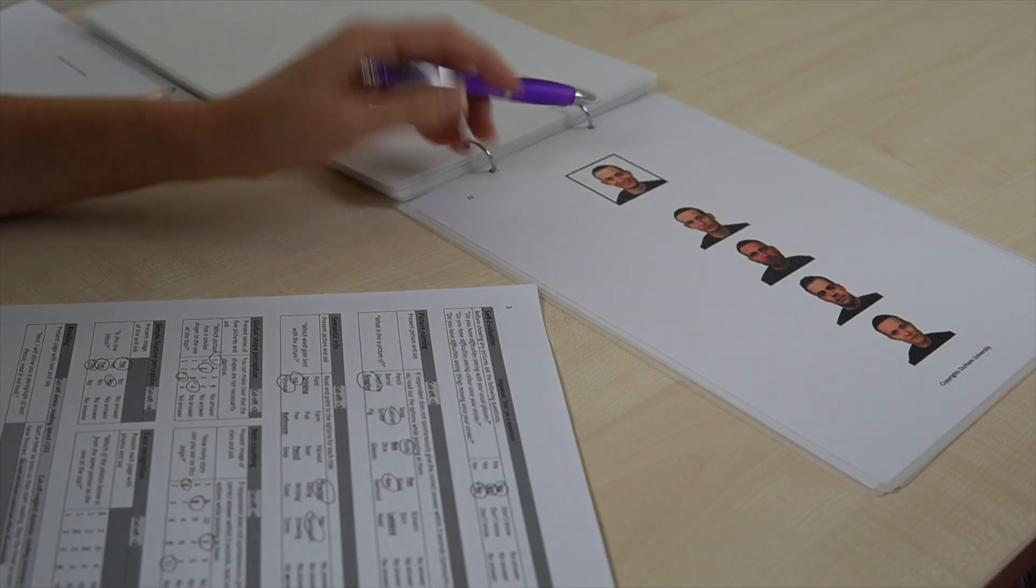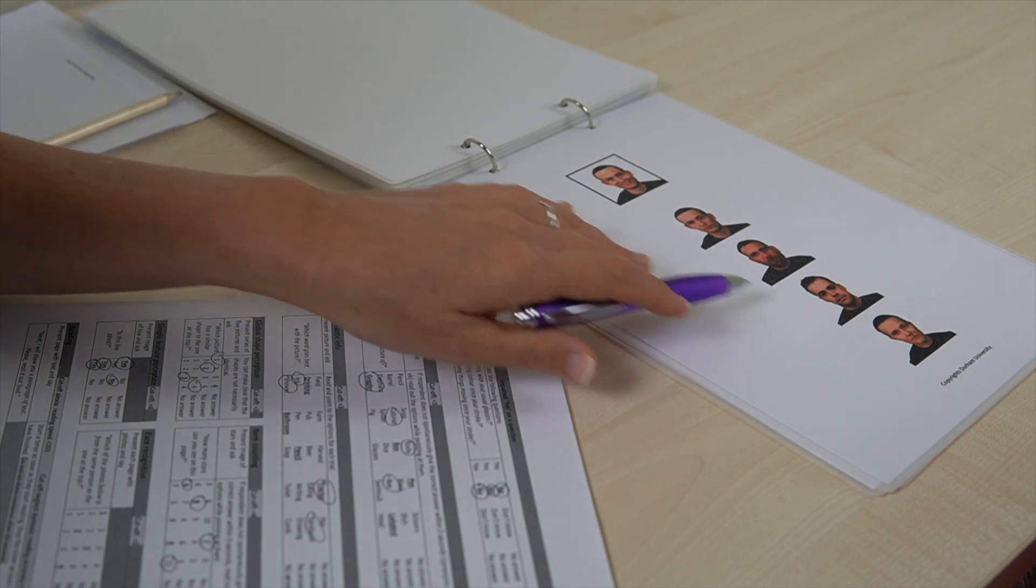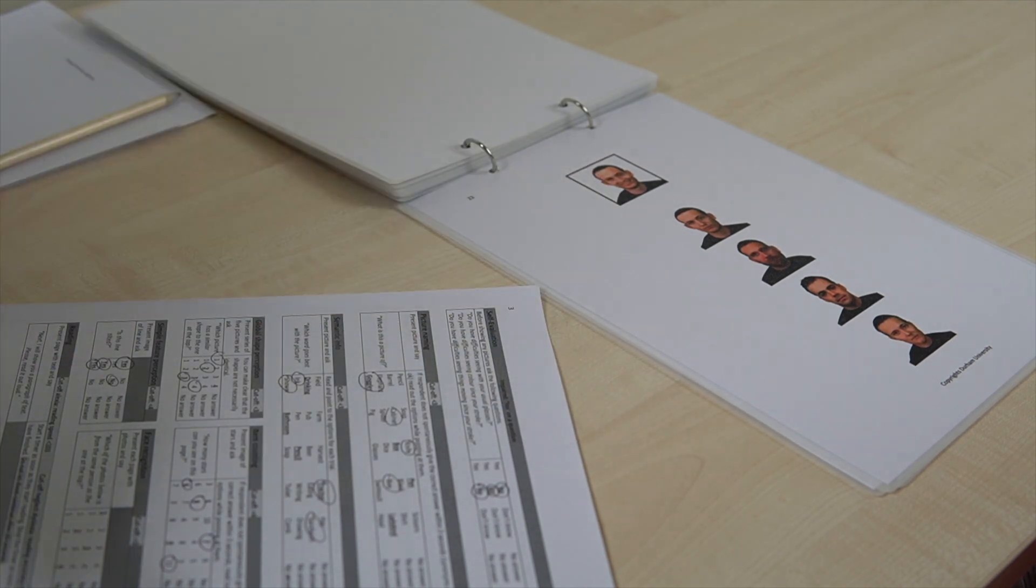In task number seven, the face recognition task, we show people a set of photos. One photo at the top, four photos below. And we ask them which of the photos below is from the same person as the picture on the top. They can point to it or they can say photo number one, two, three, four. If they say a number, again, it's best to check which one they are referring to.